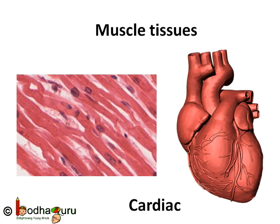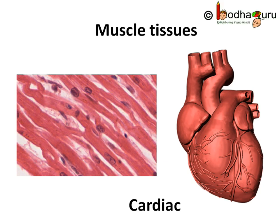The muscles found in the heart are involuntary muscles too, as we cannot control them. However, they are made of different tissues compared to the smooth or unstriated muscles found in the stomach, intestine, etc. These special tissues are called cardiac tissues, and these are made of cells that are cylindrical, branched and uninucleate — that is, they have a single nucleus.